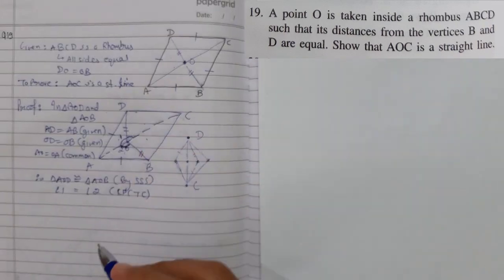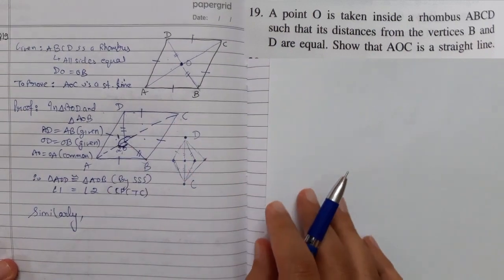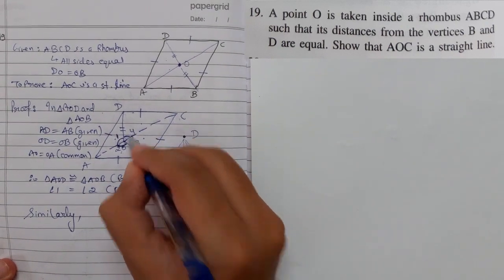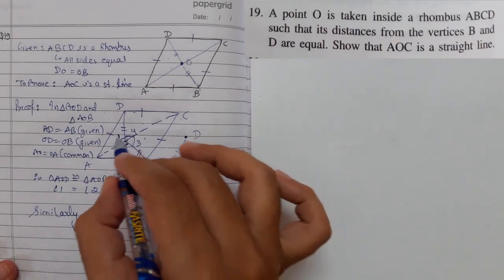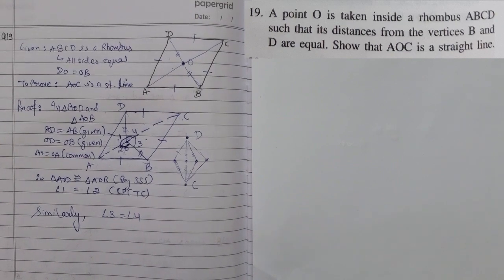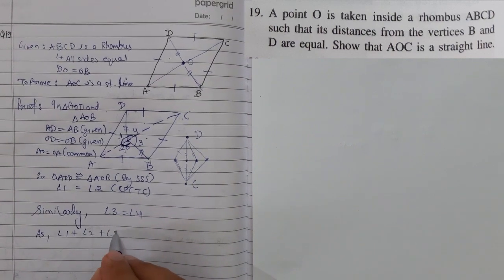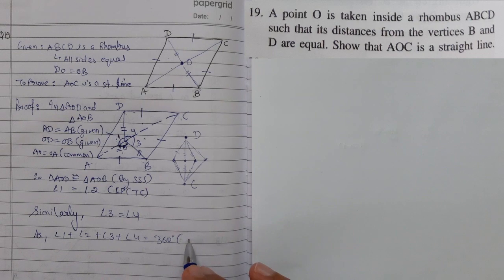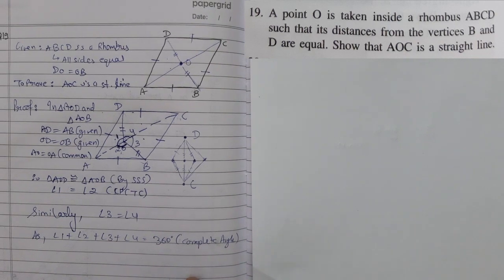Now similarly if I take these two triangles, this side equal to this, this side equal to this side common. So similarly angle 3 is equal to angle 4. As we know this is a circle, obviously at a particular point if I draw all the angles it will be 360 degrees. So angle 1 plus angle 2 plus angle 3 plus angle 4 equals 360 degrees. The property is complete angle. Complete angle. Clear?